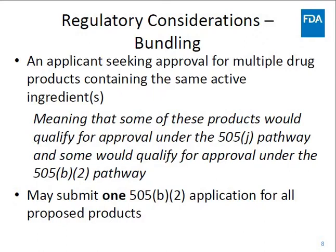The final regulatory consideration is the bundling policy. This situation covers multiple drug products that may not all be submitted in an ANDA. An applicant may seek approval for multiple drug products containing the same active ingredient or ingredients when some of these products would qualify for approval as an ANDA under the 505J pathway and others through the B2 pathway, by submitting one 505B2 application for all the proposed drug products.